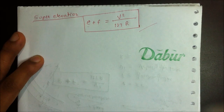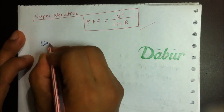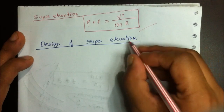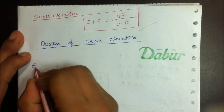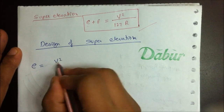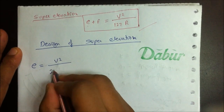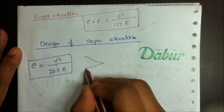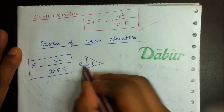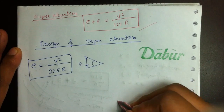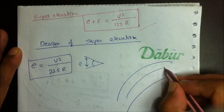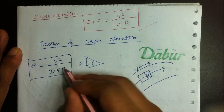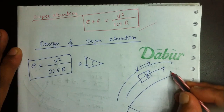For the actual design of super elevation, we calculate E using the formula: E equals V squared upon 225R, where E is the super elevation of the road, V squared is the velocity of the vehicle, and R is the radius of the curve.